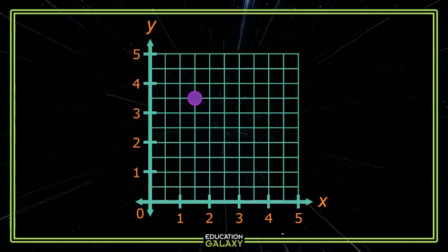Here, our number lines are both separated into two spaces between consecutive whole numbers.